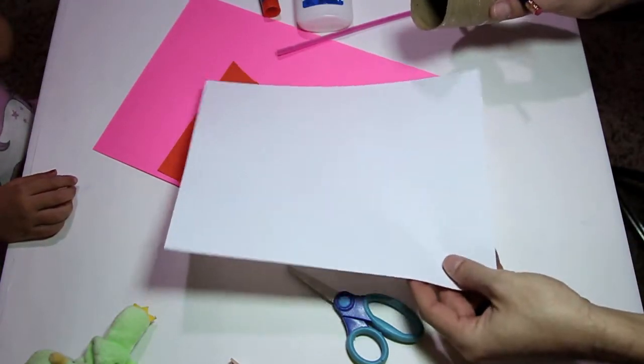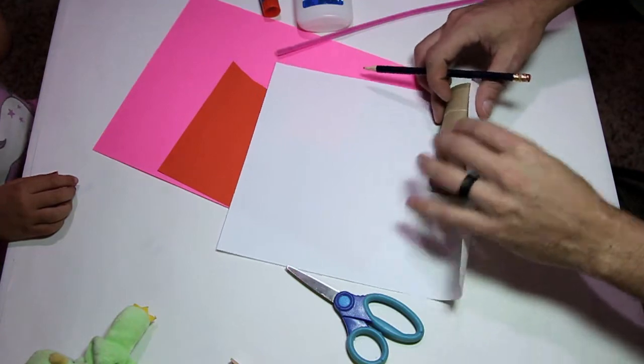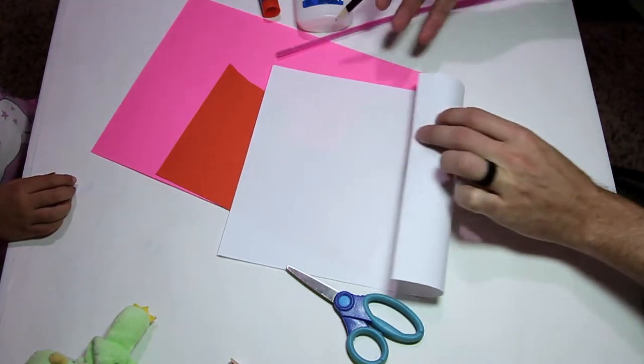You're going to take your snowman wrap, get a measurement, wrap it around, draw a line, and cut it out.